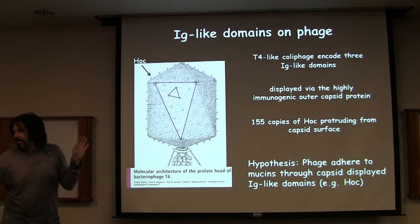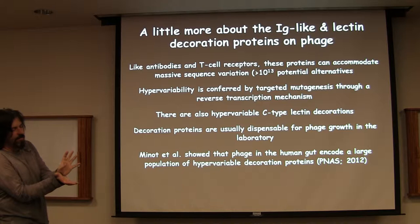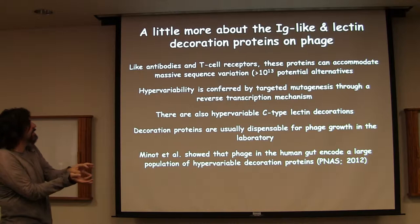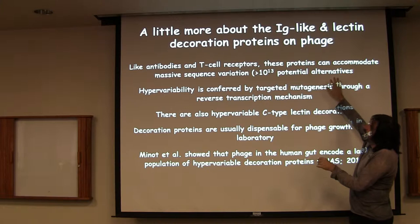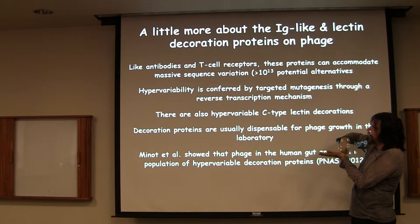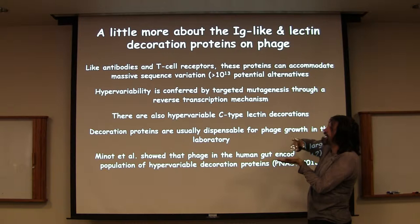What you end up with is the idea that the HAWCs, and the HAWC-like domains, are sticking and holding on to the mucus — and specifically to the mucus. The other thing we know is that in lots of cases, these things can be really hypervariable because of different molecular mechanisms. There's actually a really important one: using a reverse transcriptase to give you hypervariable regions.